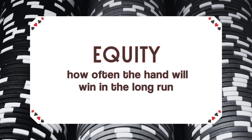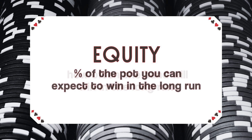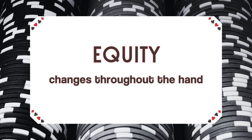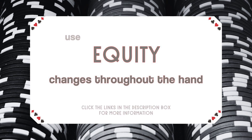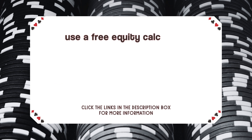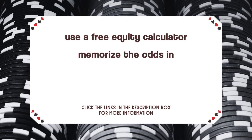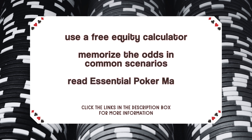Once you know what your pot odds are, you need to know how much equity you have in the hand, which is how often the hand will win in the long run — or, as some say, the percent of the pot that you can expect to win in the long run. It's important to note that the amount of equity you have changes throughout the hand. There are charts that can help you memorize the approximate equity each hand has pre-flop, which will vary based on what hand you are facing and how many hands you are facing.